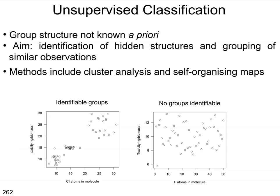Unsupervised classification methods have been developed for different purposes and there are different methods available. One of the most prominent is cluster analysis, which has a longer history than many other methods. Novel methods include, for example, self-organizing maps, but we limit our discussion to cluster analysis.